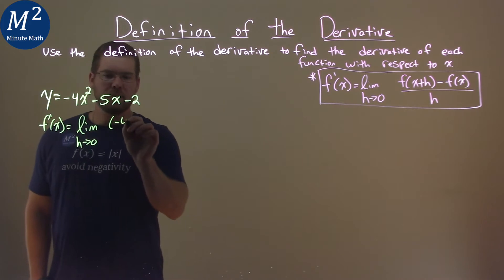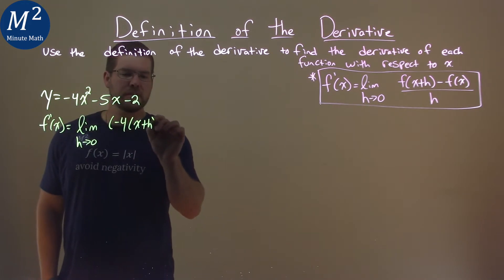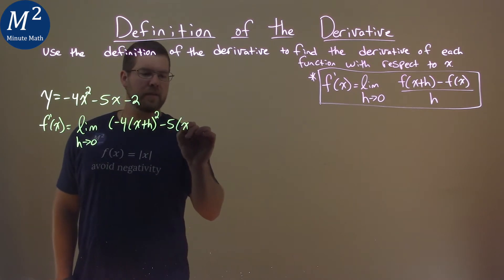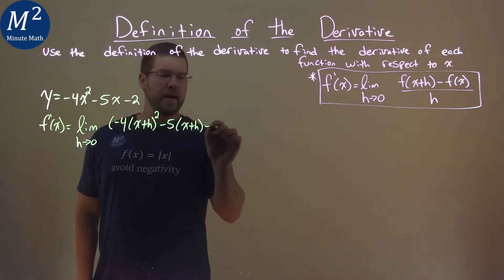So we have negative 4 times x plus h, squared, minus 5 times x plus h, and minus 2.